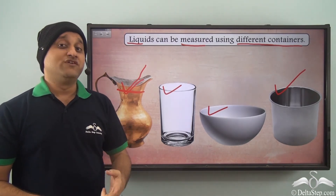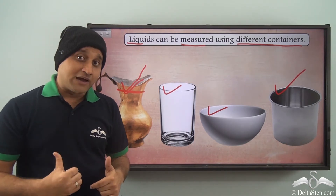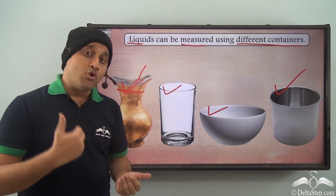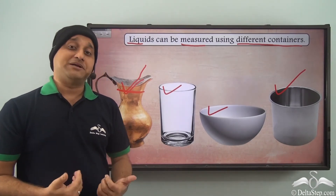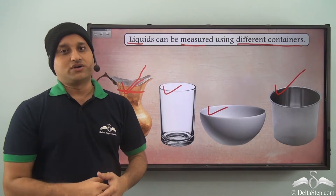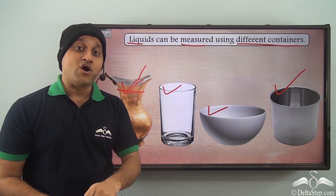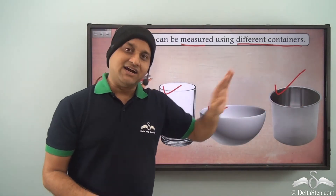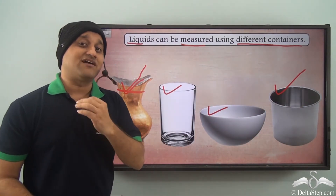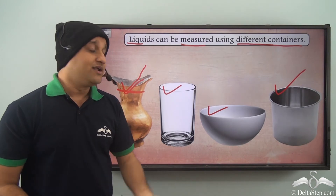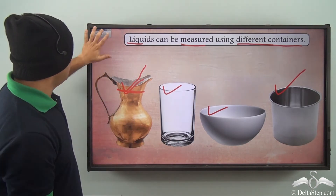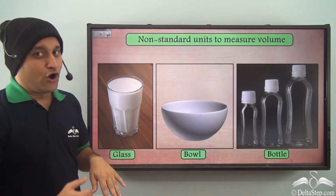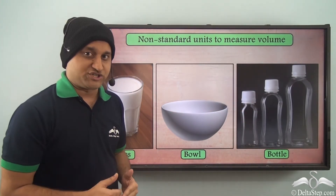Otherwise you will face the same problem Shuman's family was facing — sometimes the milk was more than required and sometimes less — because they were not measuring it. By using any of these containers to measure, you can have the right volume of liquid which you require.